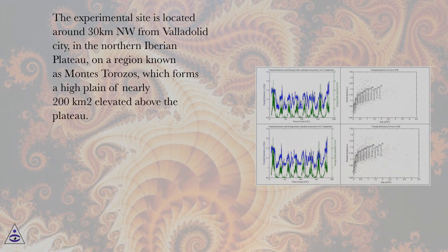The experimental site is located around 30 km northwest from Valladolid City, in the Northern Iberian Plateau, on a region known as Montes Torozos, which forms a high plain of nearly 200 square kilometers elevated above the plateau.